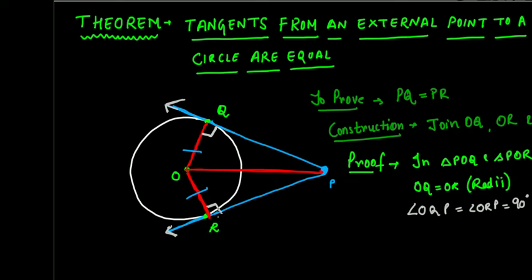And the last thing: can we say that OP equals OP? Obviously, because it's a common side. So one side is equal, there is a 90 degree angle, and the hypotenuse of both triangles is equal because it's common.